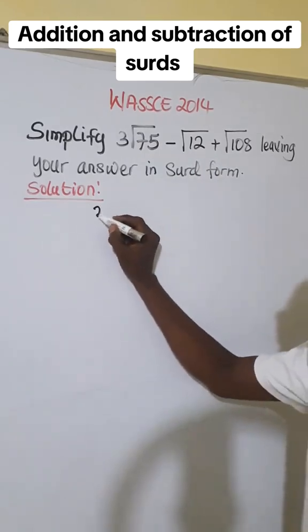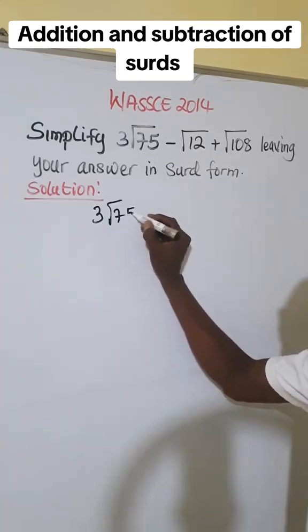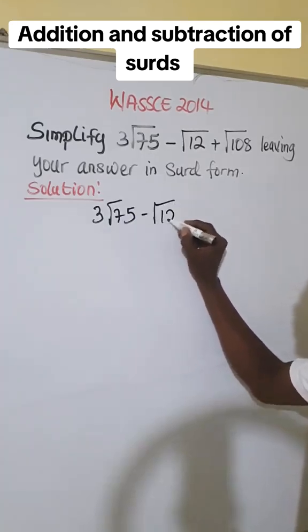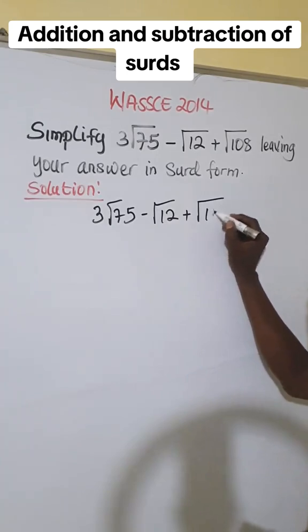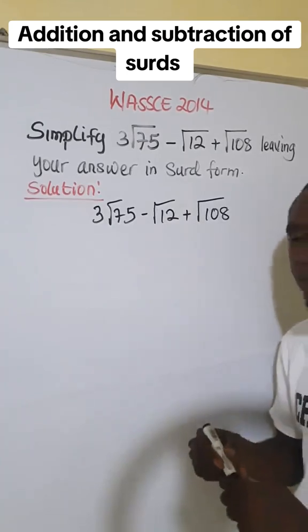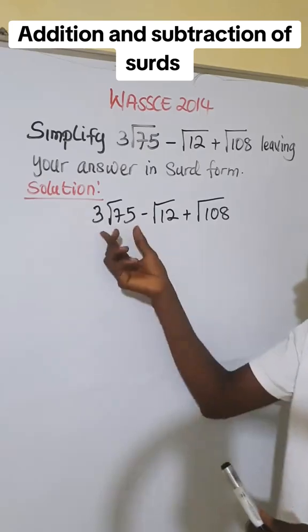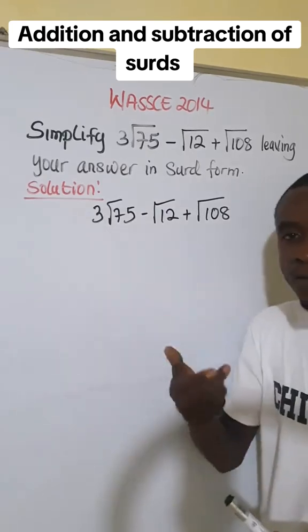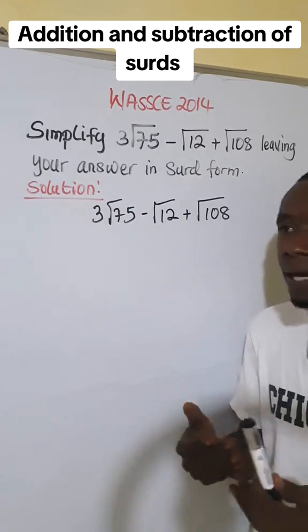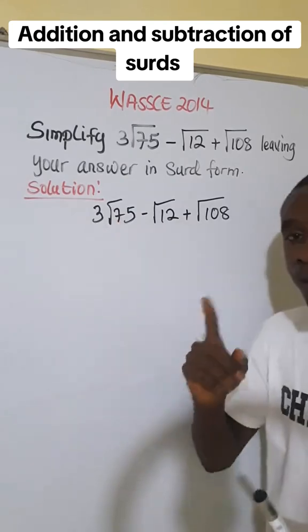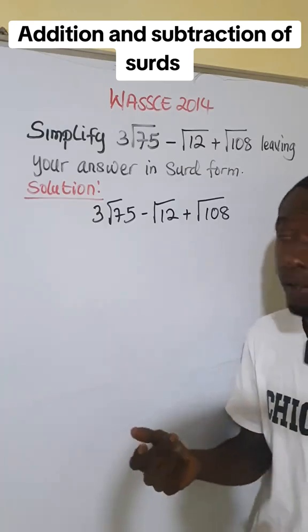We have 3√75 - √12 + √108. Our first step is to reduce the numbers inside the root. How do we do that? We are going to find two numbers which we multiply to get these numbers, but one of those numbers should be a perfect square.